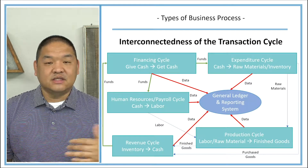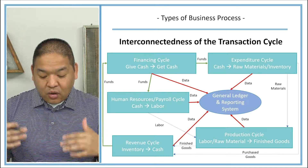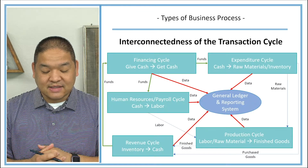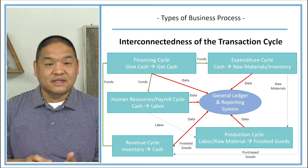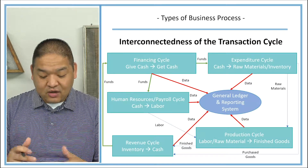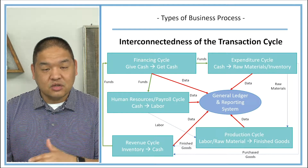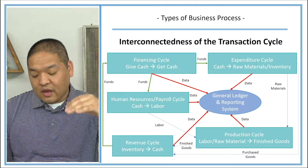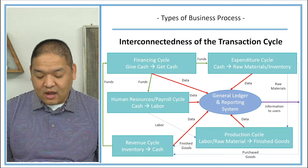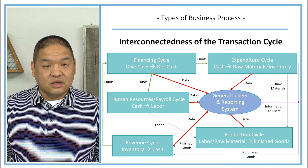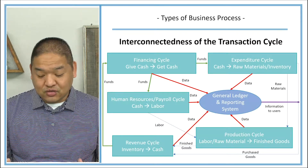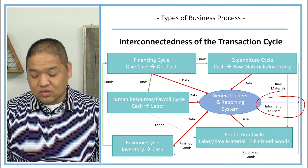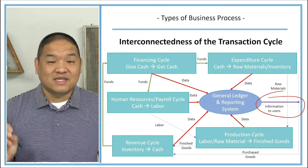We need funds to make all these cycles work. Funds may come from the revenue cycle or the financing cycle, and those funds then go to pay employees and cover expenses — that's what the green arrows on the diagram show. At the organizational level, all of that information gets summarized and sent out in the form of reports to external or internal decision makers, represented by the purple line.